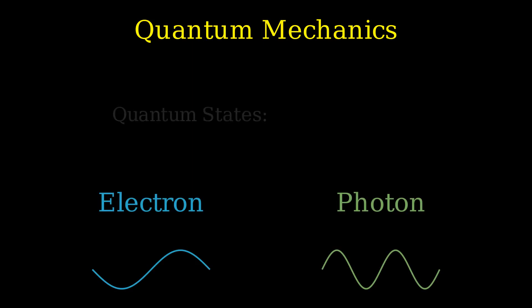In quantum mechanics, we deal with systems composed of particles, like electrons or photons. Each particle has its own set of quantum states, like its position, momentum and spin. But when we have multiple identical particles, things can get a little bit more complicated.